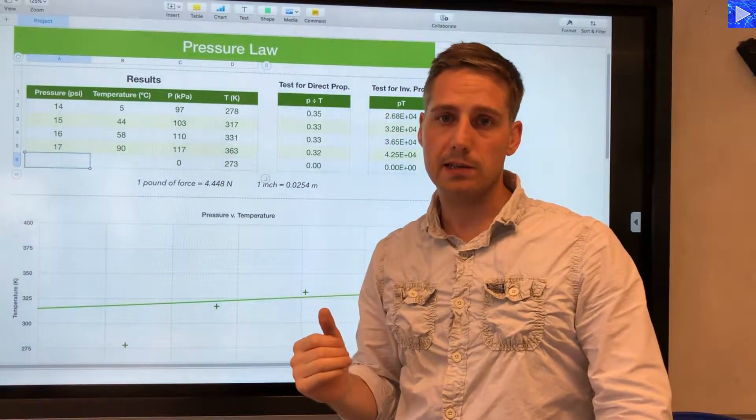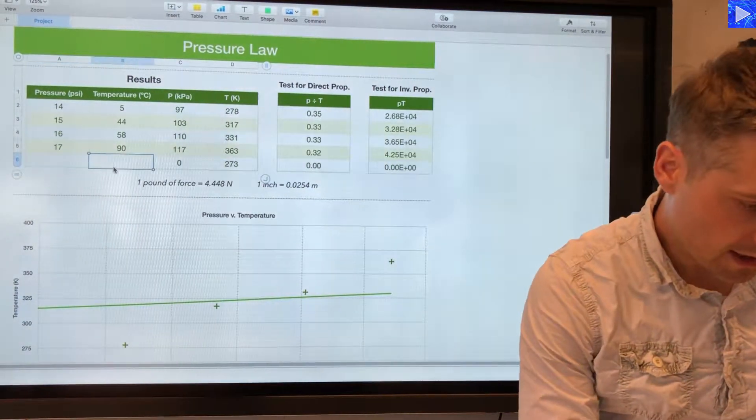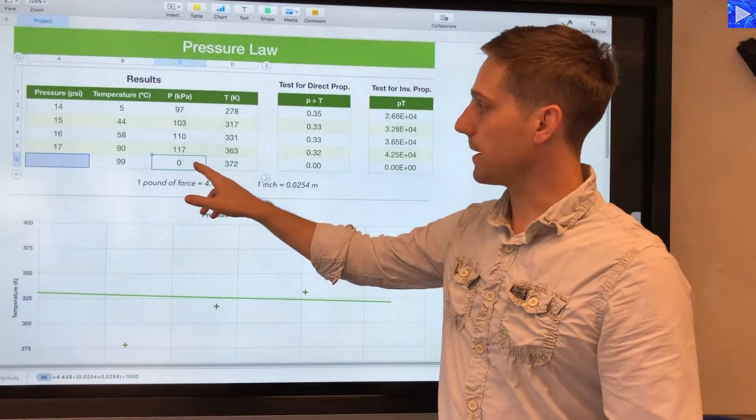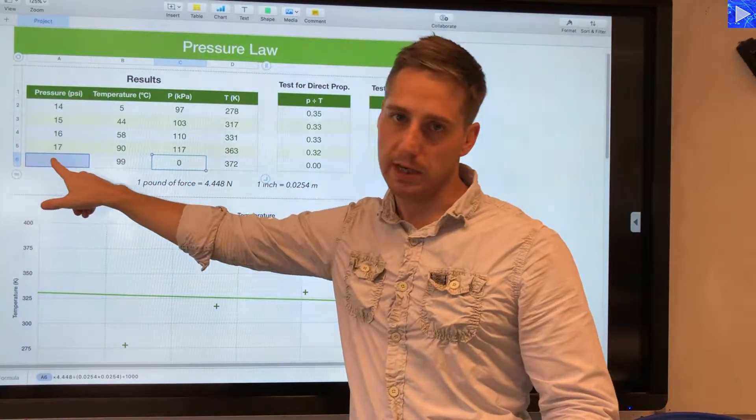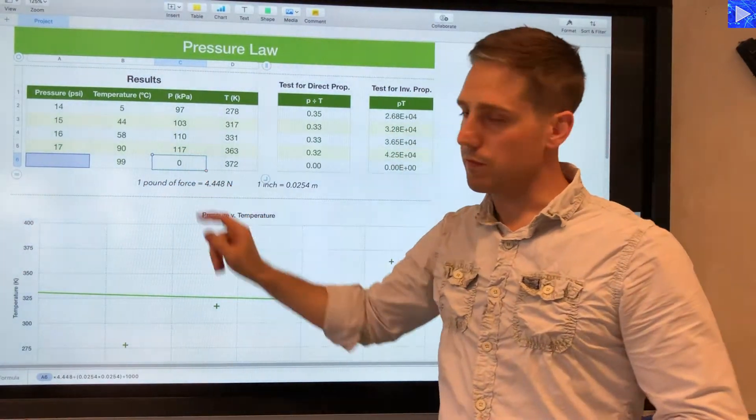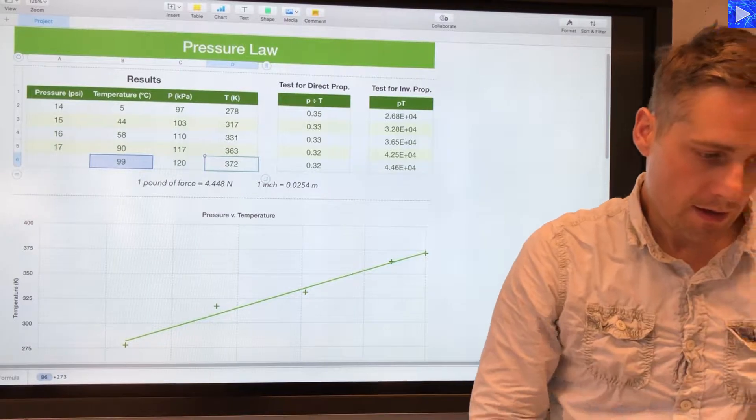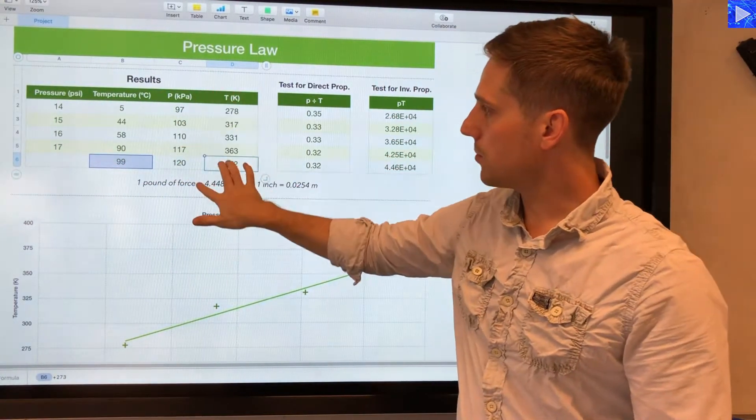So I took a reading from the kilopascal scale directly. So at 99 degrees C I was at 120 kilopascals. So what I'm going to do here is just overwrite this formula, but since I'm not putting in a psi value, just overwrite that formula with the number which is 120. Okay, so I now have my data being inputted: pressure and temperature right here.